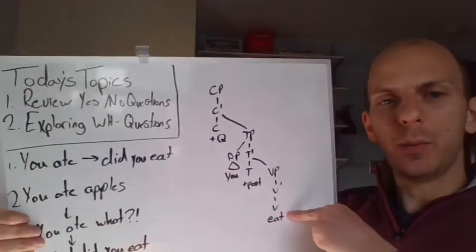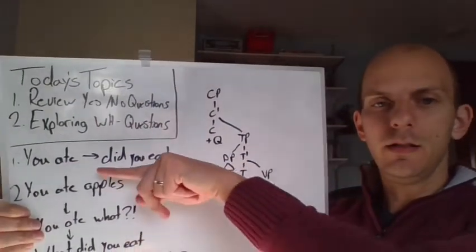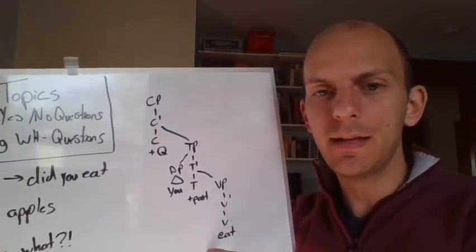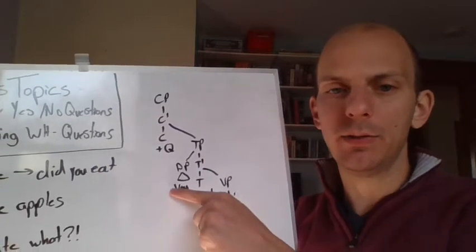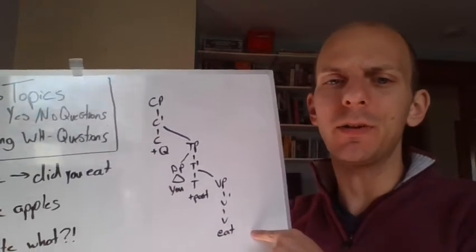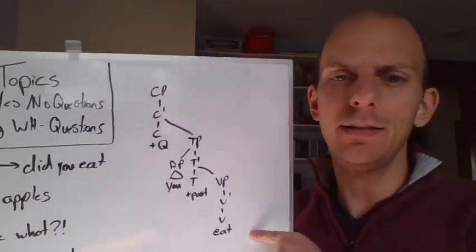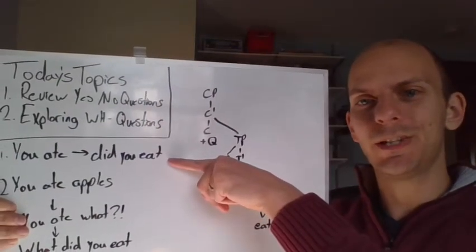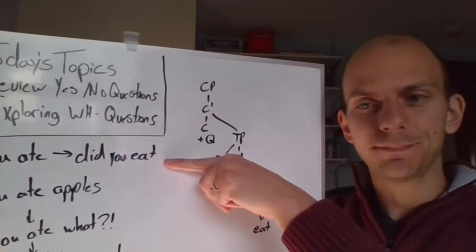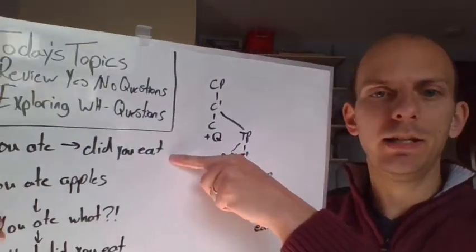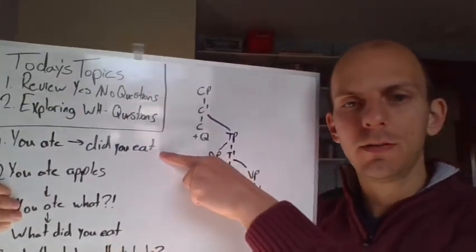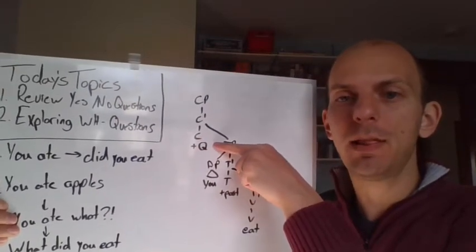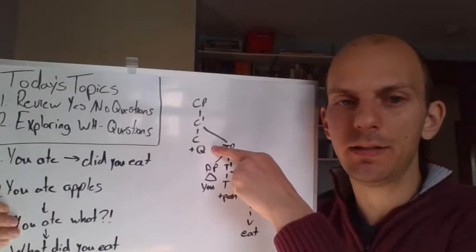Now what do we need to do to this? Well, if we wanted to get the sentence 'you ate', this would be really simple. All we would do is drop this past tense down onto eat and you would have 'you ate'. No big deal, right? Nice and easy. If instead we want to get this question—there should be a question mark here—for 'did you eat', it's a little bit more complicated but not much.